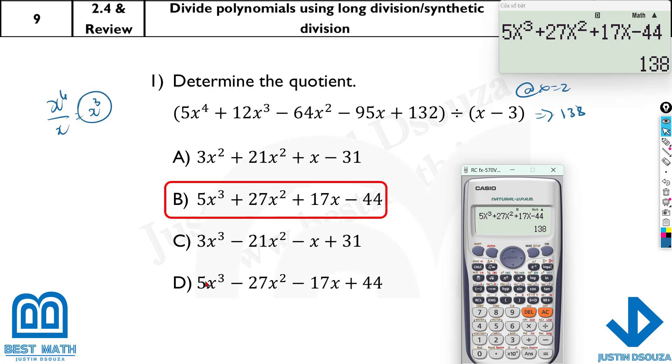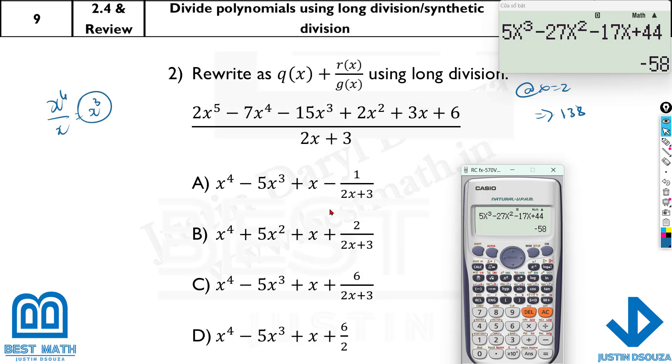But let me choose the last one, just for argument's sake. It is 5x^3 minus 27x^2 minus 17x plus 44. So here, the answer is minus 58, which is not the same as 138. Only one correct answer can be possible in the four options. So that's how we can do division very easily.